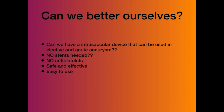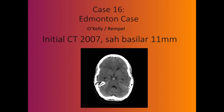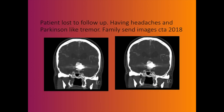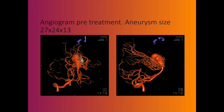Can we do better? We need an intrasaccular device for acute cases requiring no stents and no antiplatelets. Here is a case from colleagues in Canada — a basilar aneurysm that was previously coiled, showing massive recurrence. These difficult cases make you consider stent, flow diverter, or Contour.